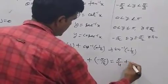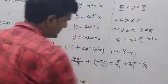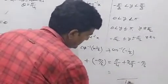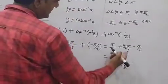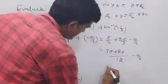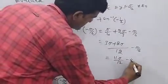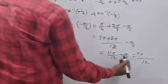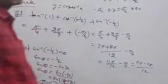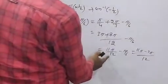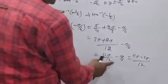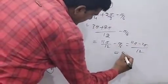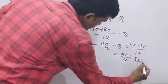Now we can solve: pi by 4 plus 2pi by 3 minus pi by 6. Taking the LCM as 12: that gives 3pi plus 8pi minus 2pi all over 12, which equals 11pi minus 2pi over 12, equals 9pi by 12, equals 3pi by 4. This is the answer.